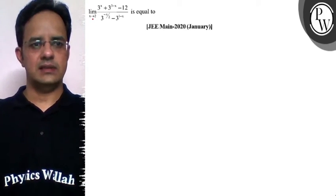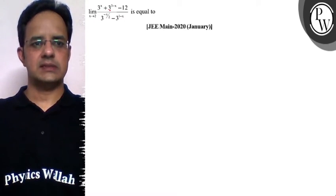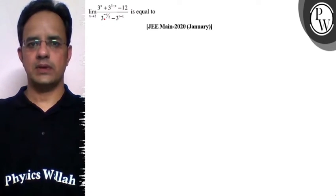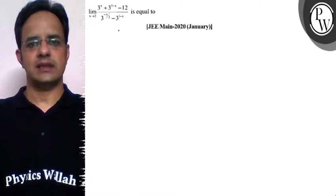Hello watcho. The problem is limit x tending to 2, 3 raised to power x plus 3 raised to power 3 minus x minus 12, divided by 3 raised to power minus x by 2 minus 3 raised to power 1 minus x.